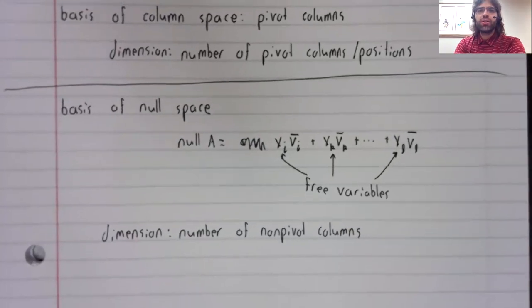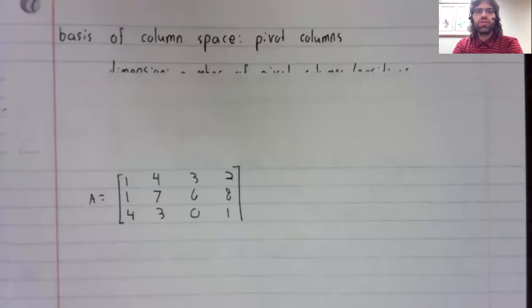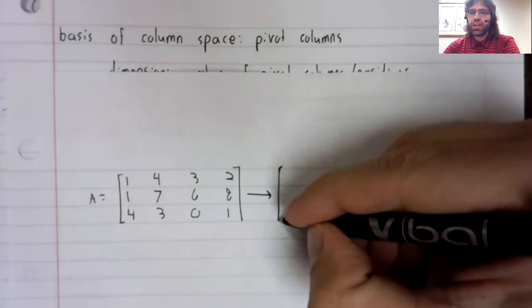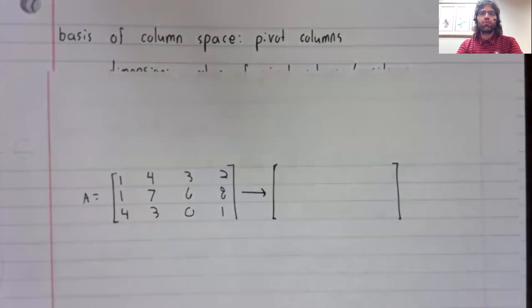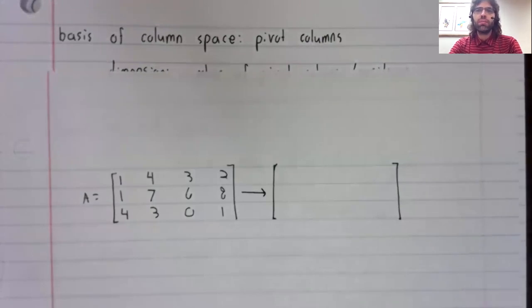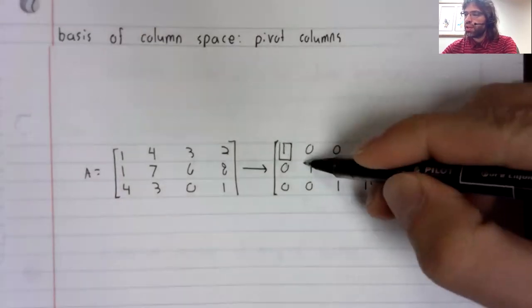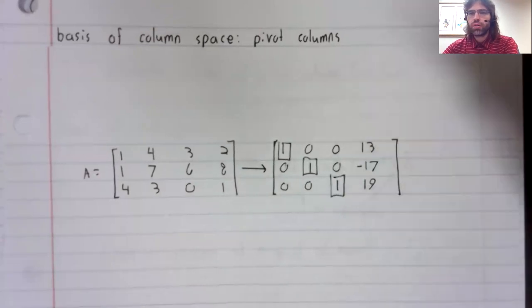We could do a quick example. Suppose that A were this. We take A, we put it into row echelon or reduced row echelon form, and our pivot positions are here.